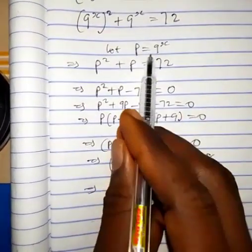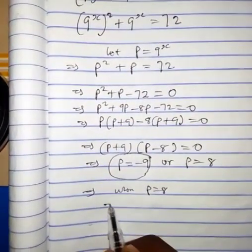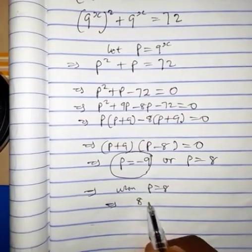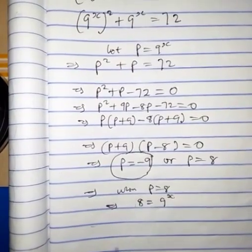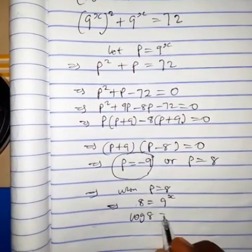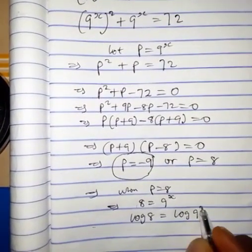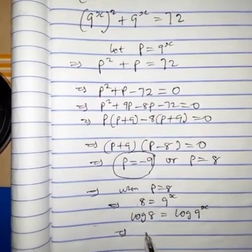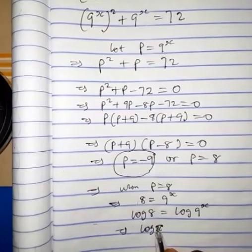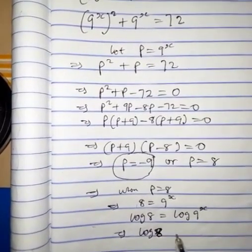Remember that we let p equal 9 raised to the power of x. This implies that 8 equals 9 to the power of x. We take the logarithm of both sides, so log 8 equals log 9 raised to the power of x.